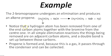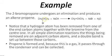Notice that a hydrogen atom has been removed from one of the end carbon atoms together with the bromine from the center one. So if you are removing the bromine from here, there are two adjacent carbons — one on the right side and one on the left side — so choose any one to remove hydrogen. You cannot remove hydrogen from both sides.